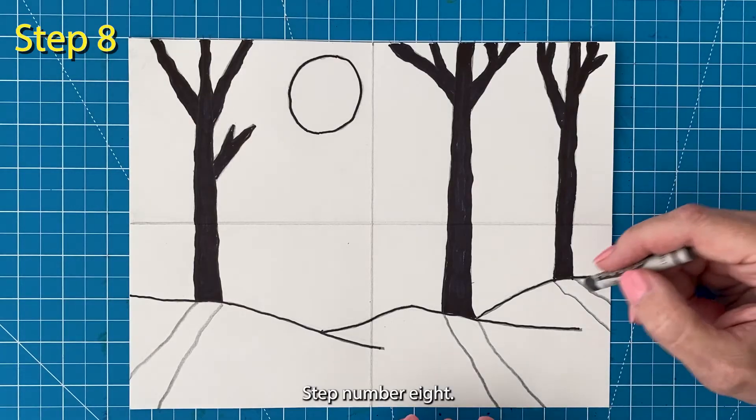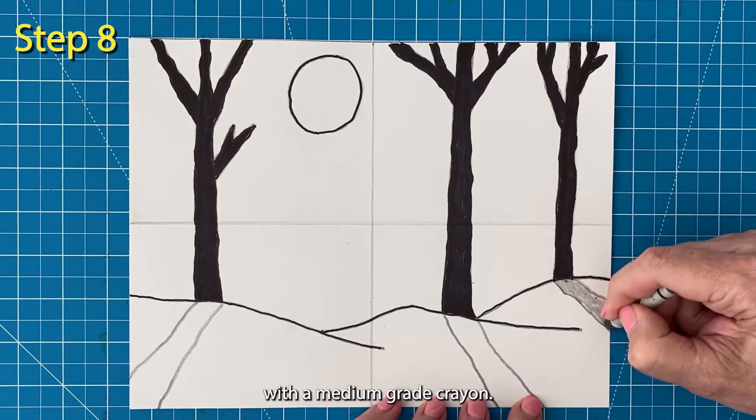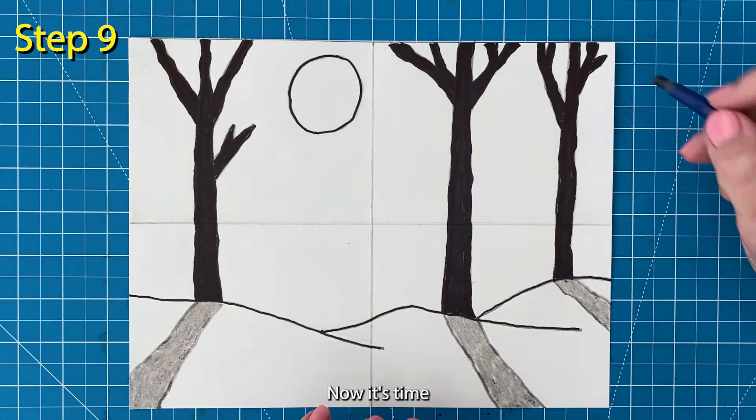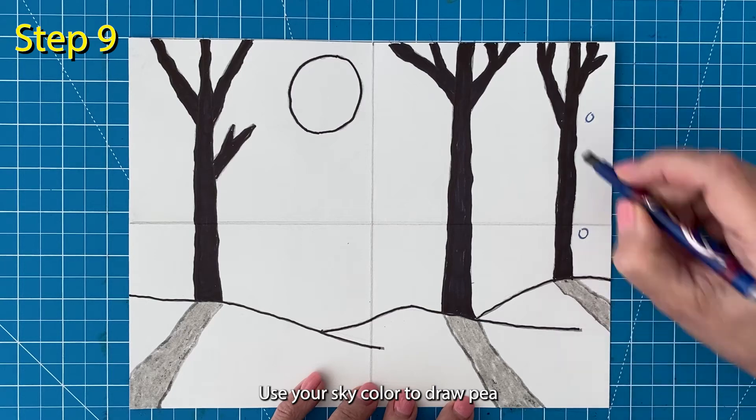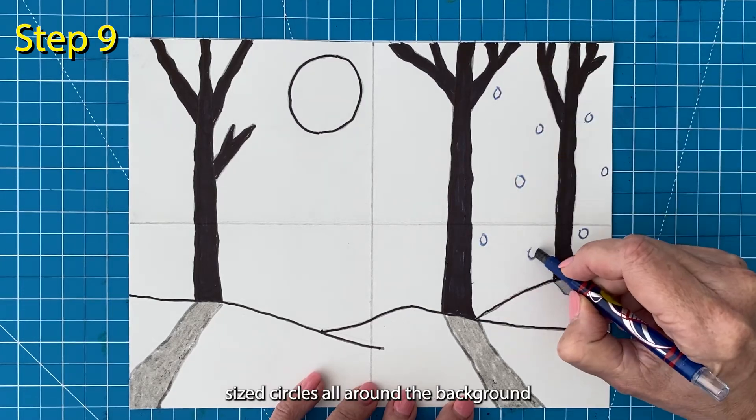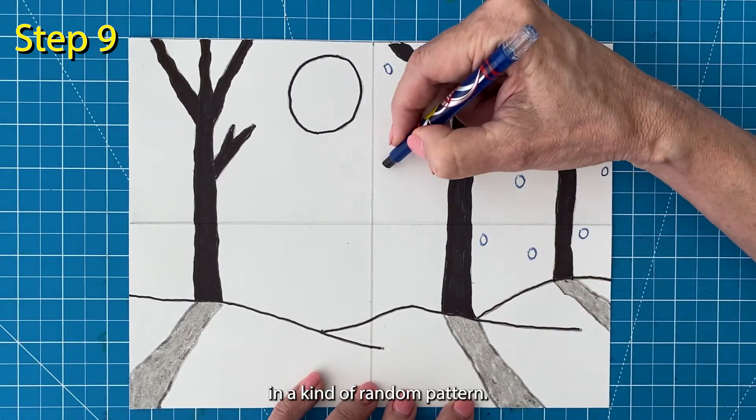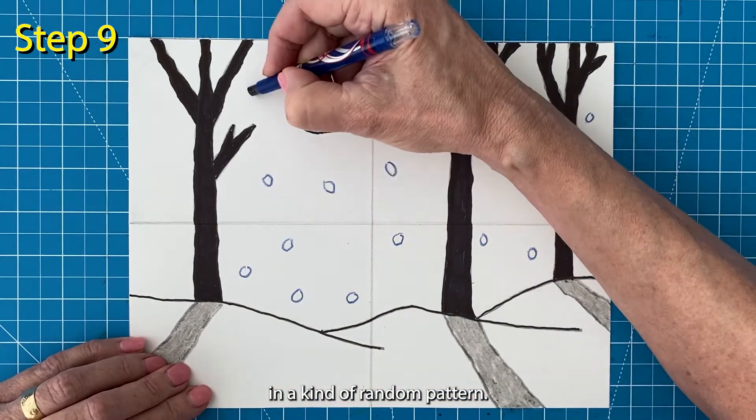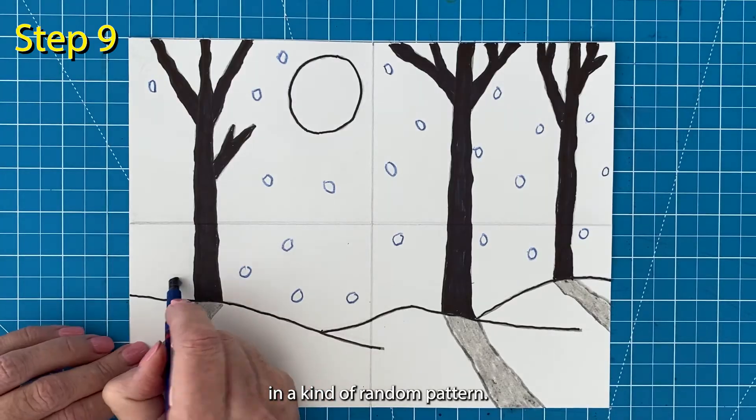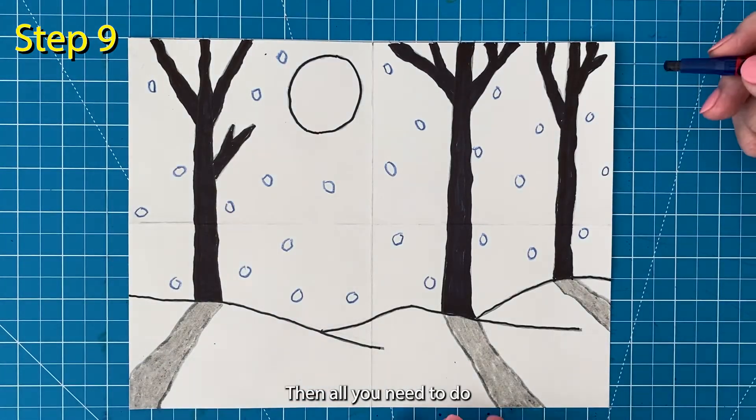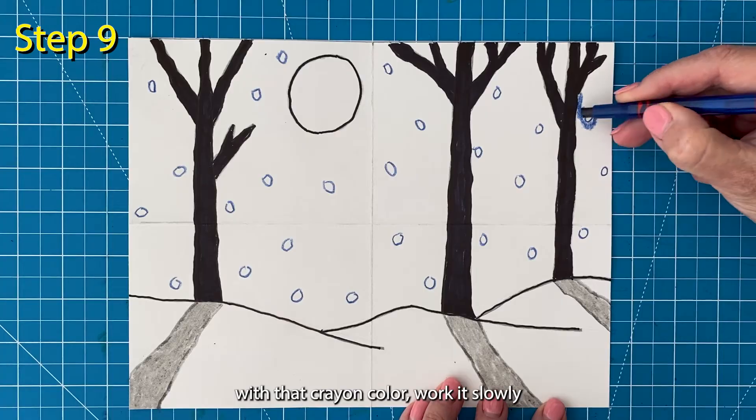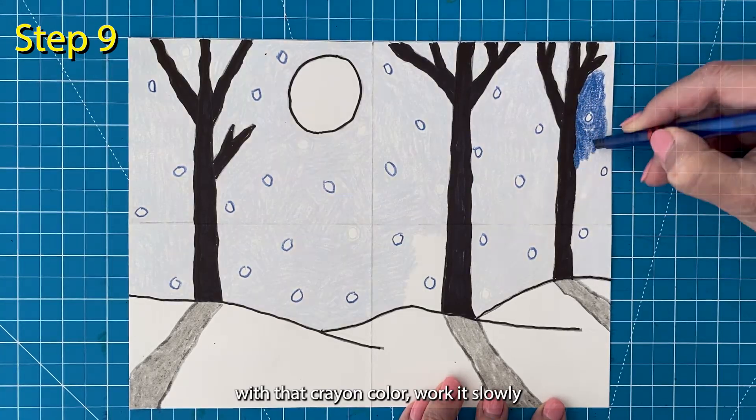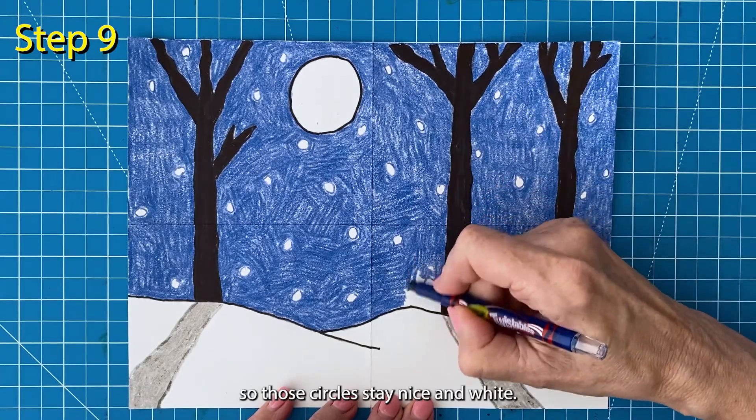Step number eight. Now you can fill in those shadows with a medium gray crayon. Step number nine. Now it's time to make the snowy background. Use your sky color to draw pea sized circles all around the background in a kind of random pattern. Then all you need to do is carefully fill in the background with that crayon color. Work slowly so those circles stay nice and white.